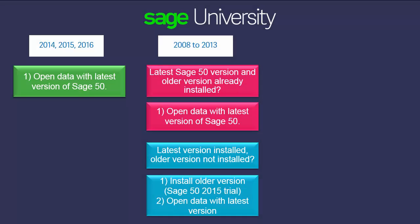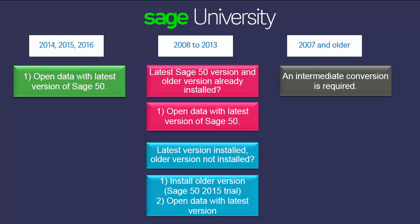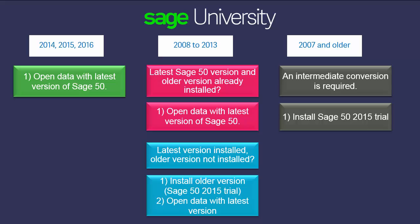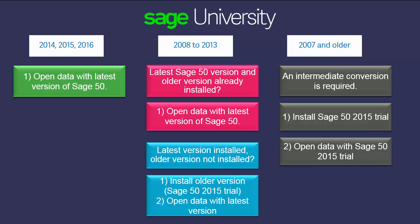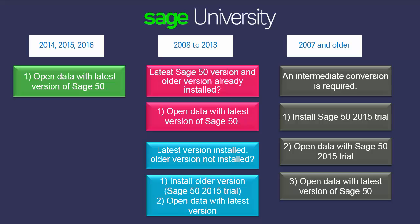If you are updating from version 2007 or older, an intermediate conversion is required. Let's review the steps to take in this case. First, install a trial version of Sage 50 2015, making sure you select the same edition as the latest version of Sage 50 that you have. Then, open the data file with Sage 50 2015 to convert it. And finally, open the data with the latest version of Sage 50. After the conversion is successful, you can uninstall Sage 50 2015 if necessary.